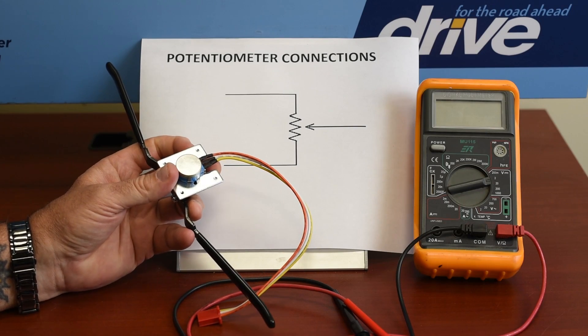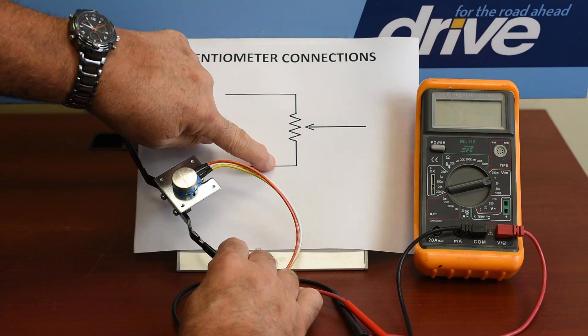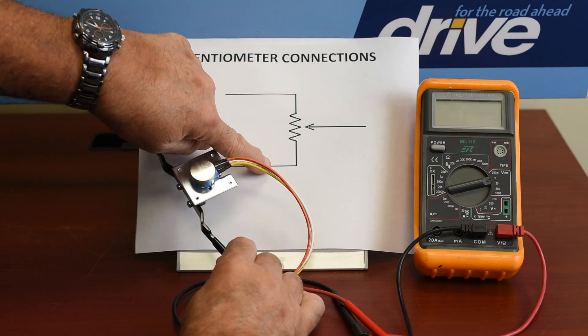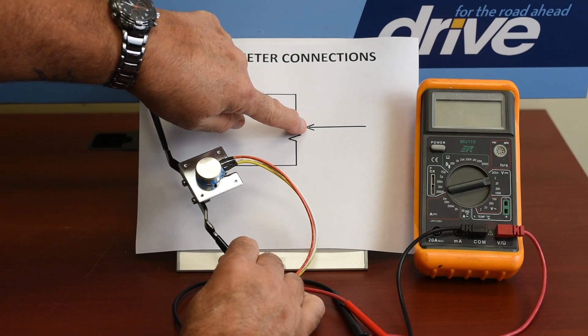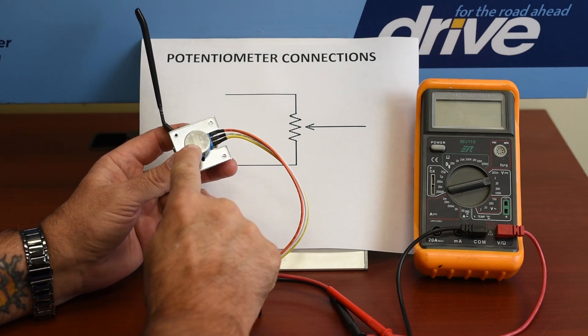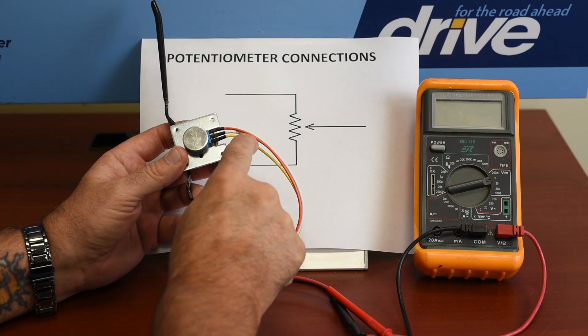A throttle pot is a variable resistor. As you can see by the schematic right here, we have an outside terminal, another outside terminal, and a center terminal, also called the wiper. You have it here on the actual potentiometer itself, your outside, your outside, and your wiper.